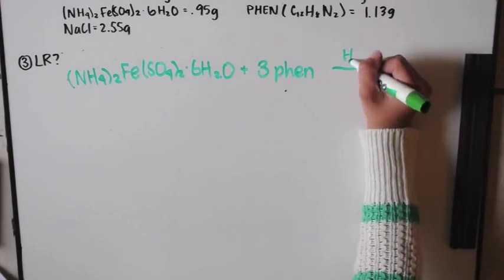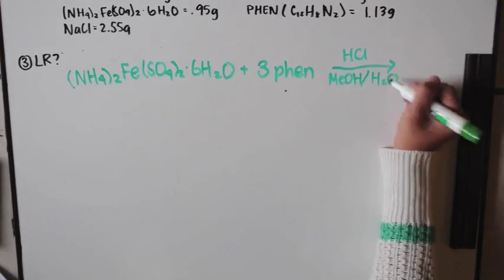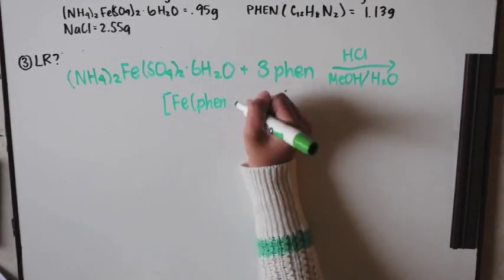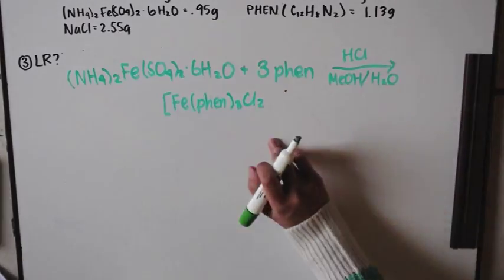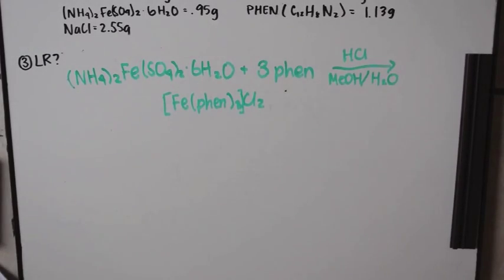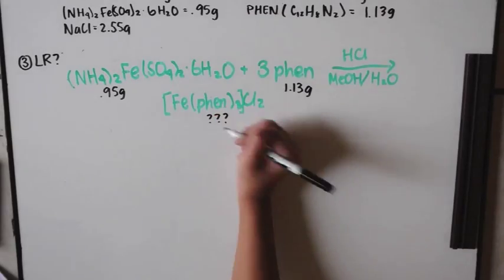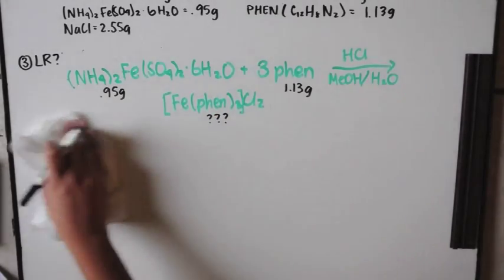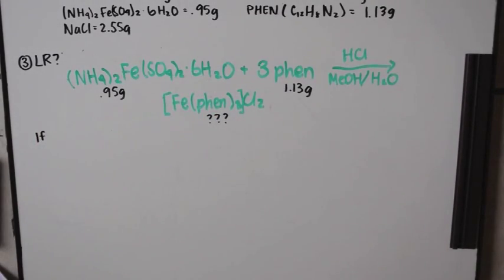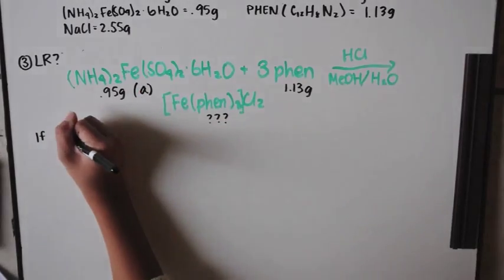Ferrous ammonium sulfate plus three phen would produce one mole of iron tris phen chloride salt. Now, it's also asking which is the limiting reagent, which one would produce the least amount of iron tris phen chloride salt? So if A,